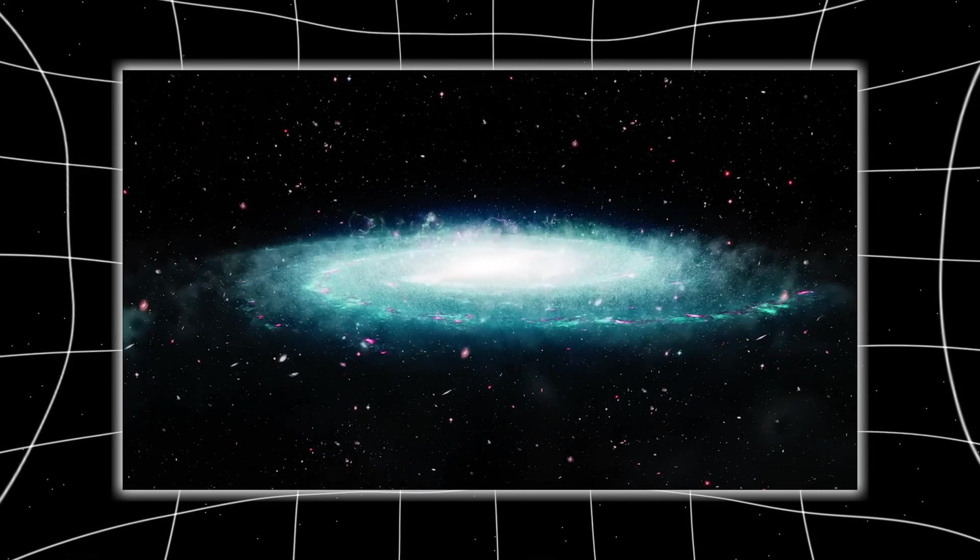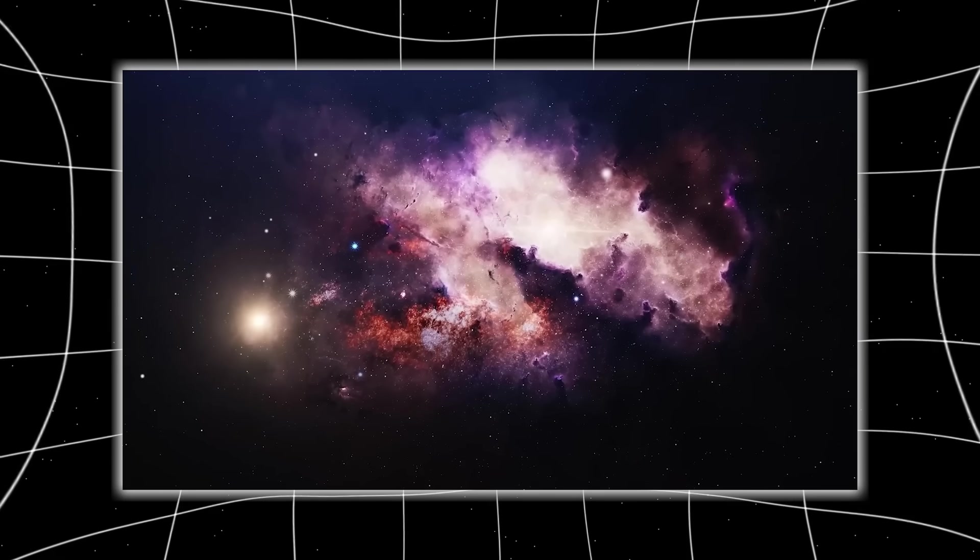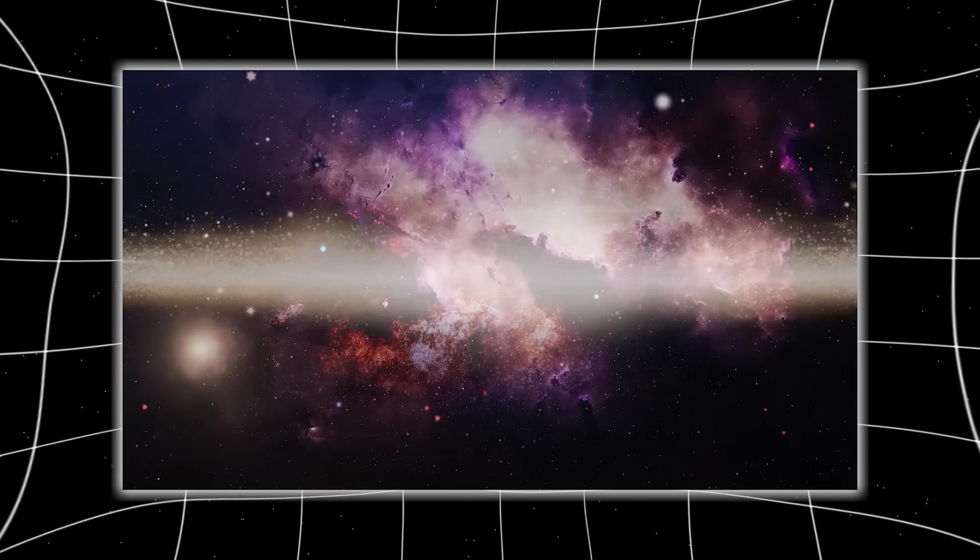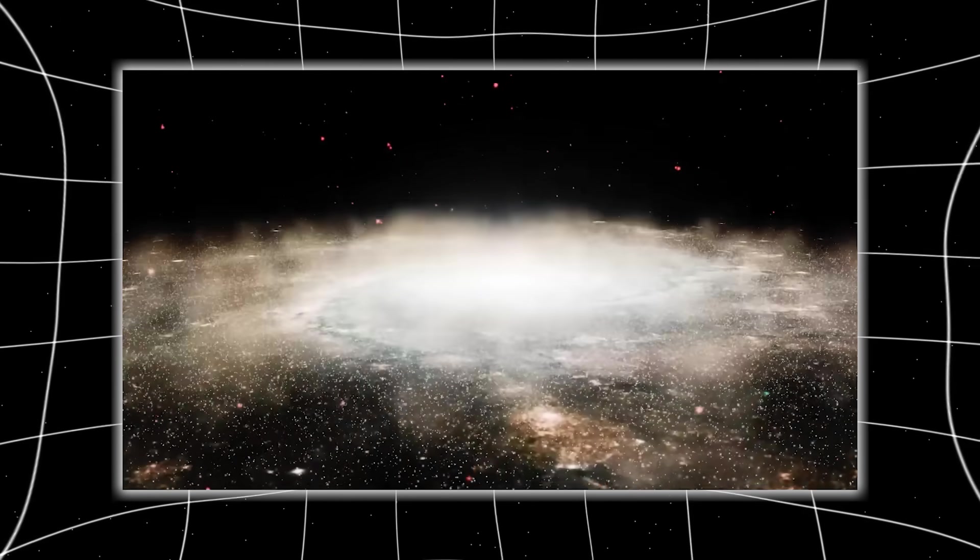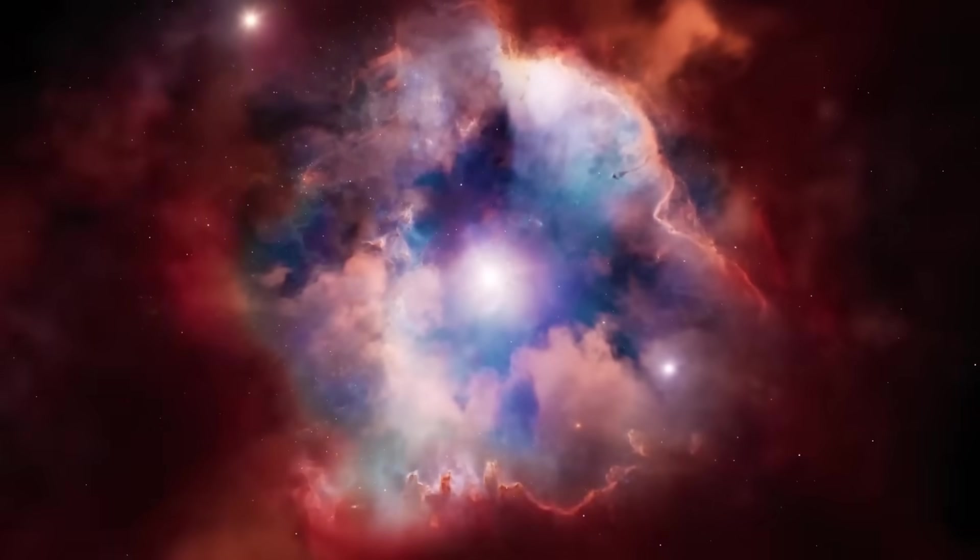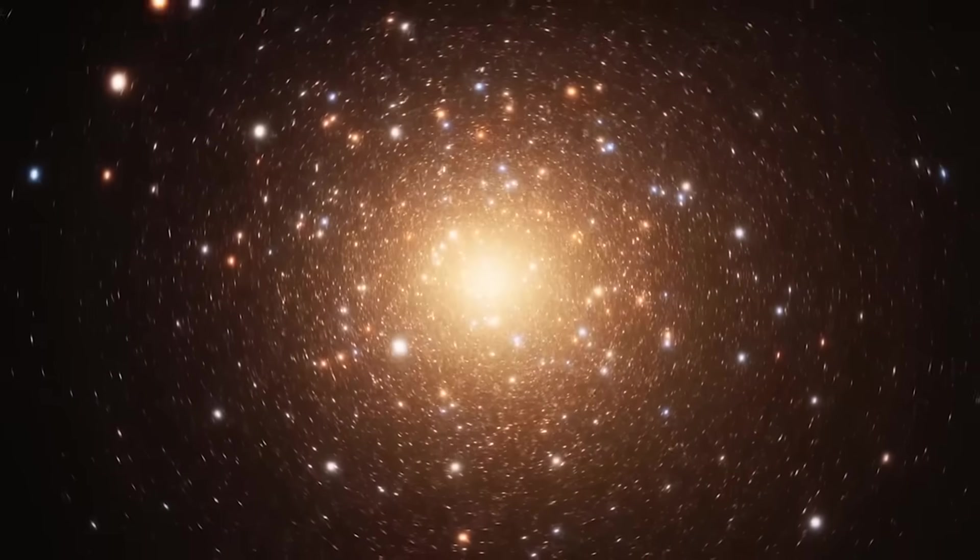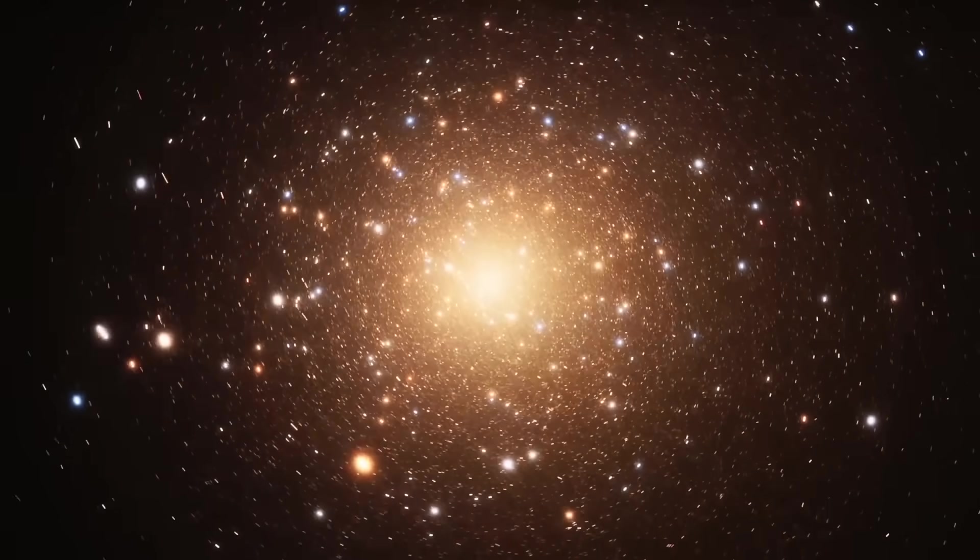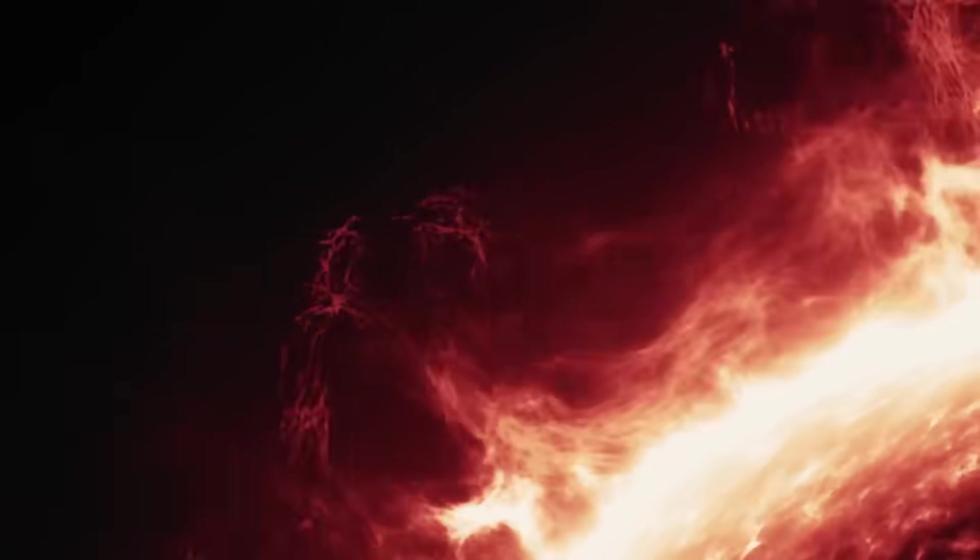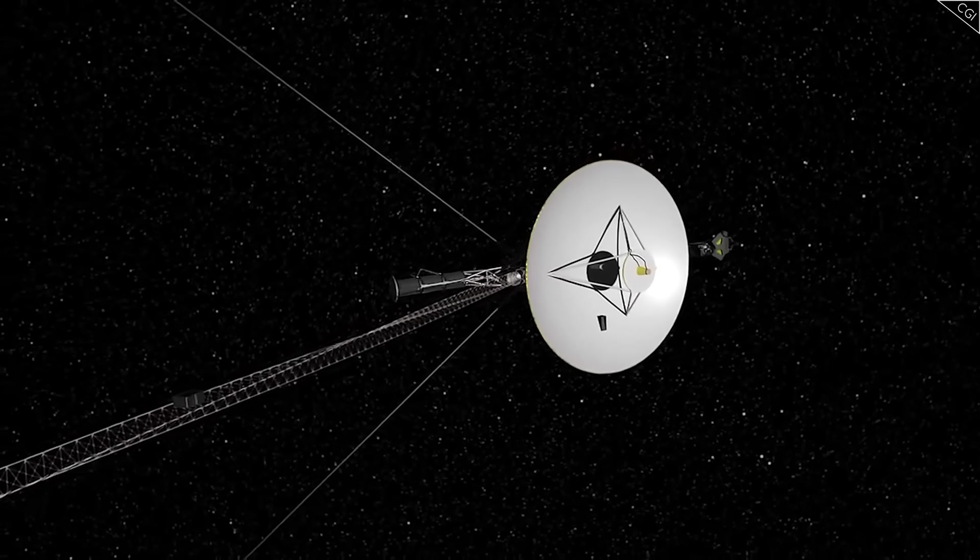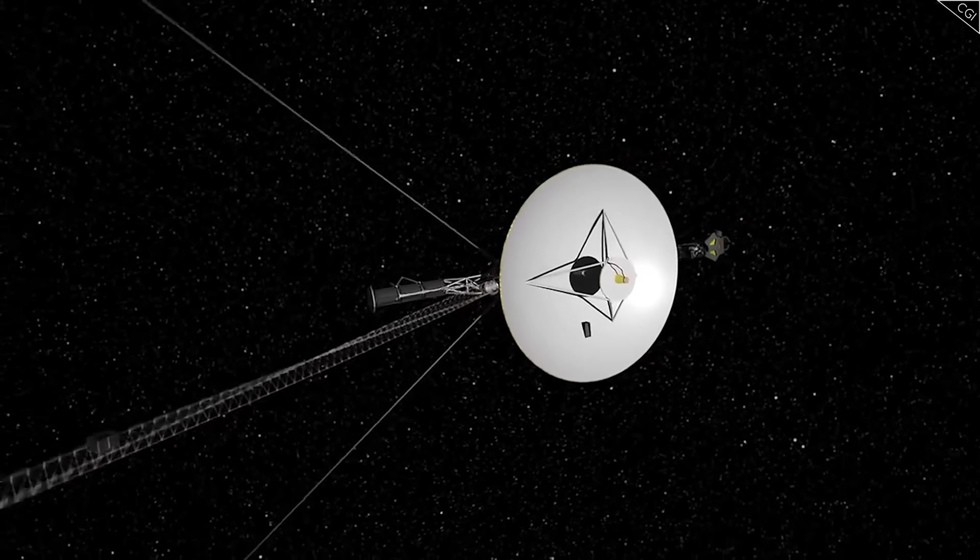Some compared it to the crop circle phenomenon on Earth, patterns that defy chaos and suggest deliberate intent. Except this time the message came not from a field of wheat, but from the abyss of interstellar space. If nature could sculpt such perfection, it would require laws of physics we have yet to even theorize. If not, then Voyager had just captured a glimpse of technology so advanced it appears indistinguishable from nature itself.